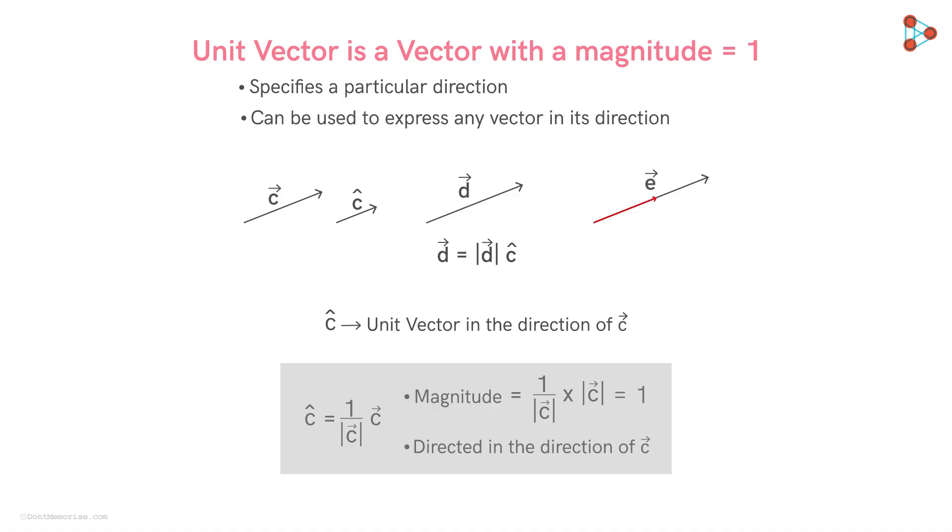Similarly, vector e will be equal to the magnitude of vector e times the vector c hat. And here as well, we can write the vector c to be equal to the magnitude of vector c times the vector c hat. So now the idea of a unit vector is very clear to us. But we still have to understand what component vectors actually mean.